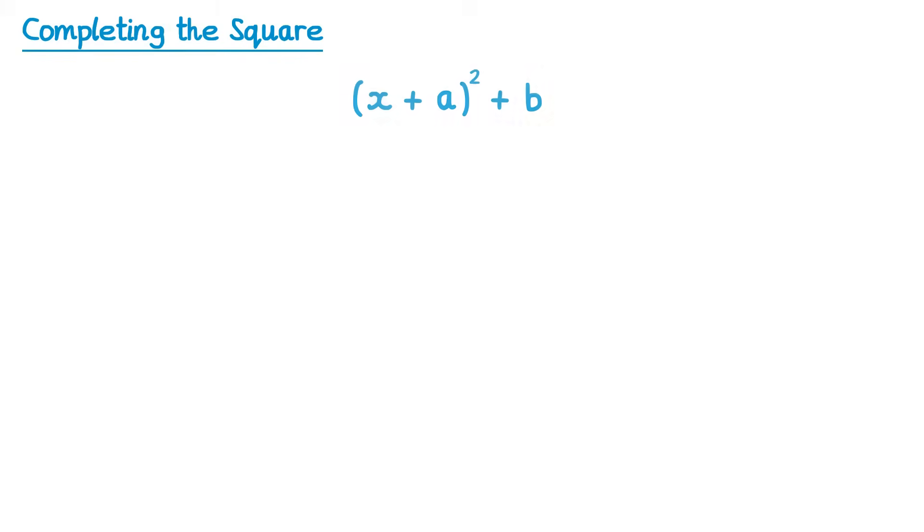We're going to look at the completed square form in a bit more detail. Specifically we're going to look at this first part x plus a all squared. Now all this means is x add a number and then square it, or perhaps x take away a number and then square it.